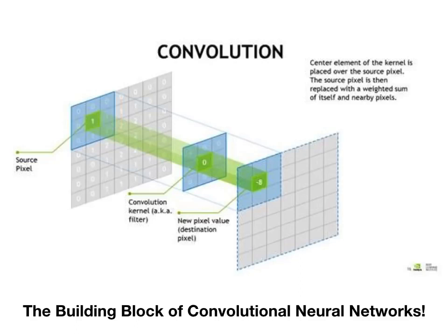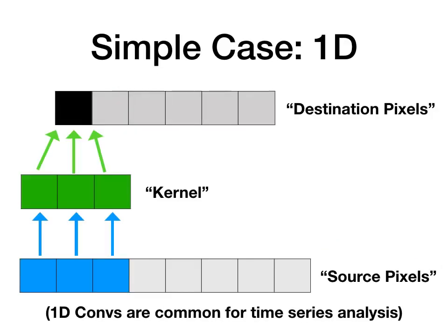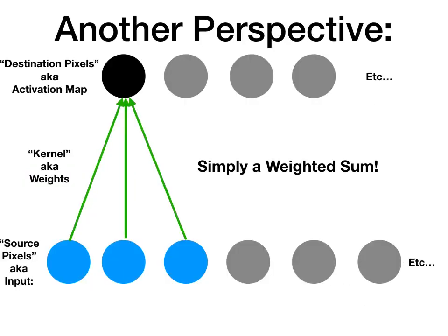What really helps to better understand this is to actually start in the 1D case. So taking our source pixels, our kernel, and our destination pixels from the previous image, we're just going to flatten these out and look at one dimension. We're going to take these source pixels and call these our inputs, and take our destination pixels and call that an activation map. The important thing here is that we have these kernels, and it turns out that kernels work just like weights in a dense neural network. Each of these kernels at every input step is simply a weighted sum over the input space it's connected to.